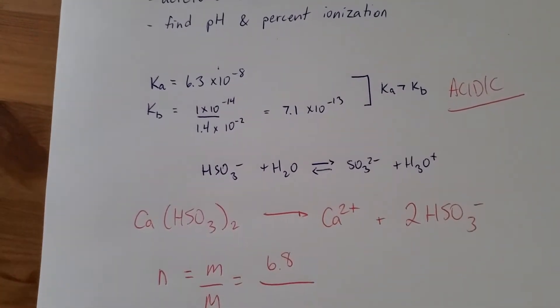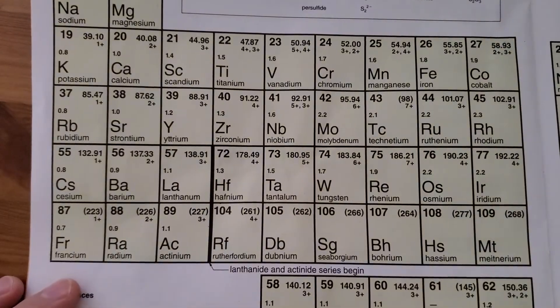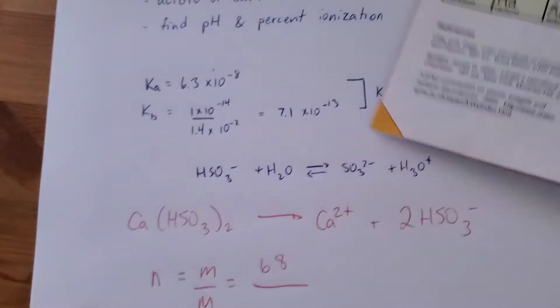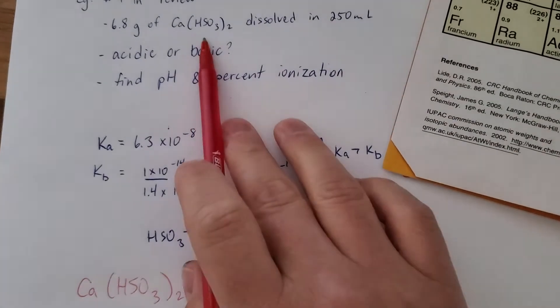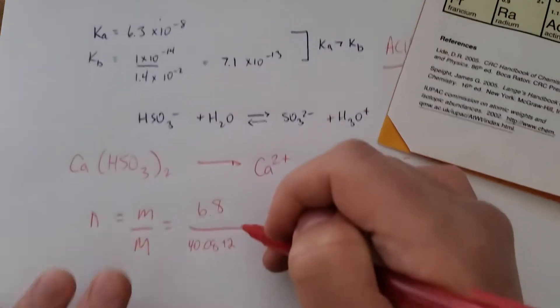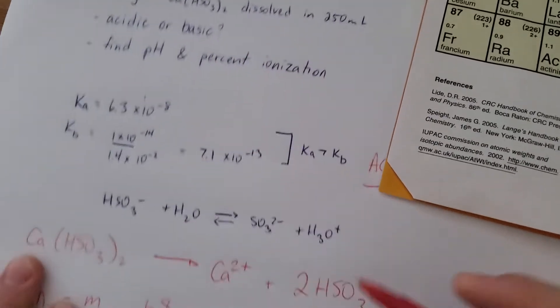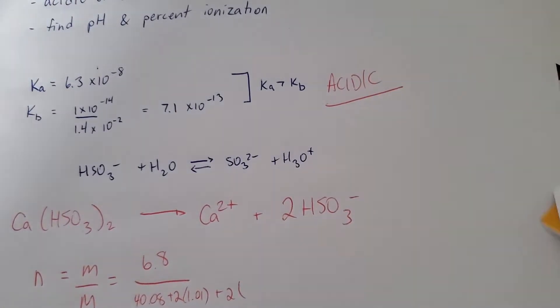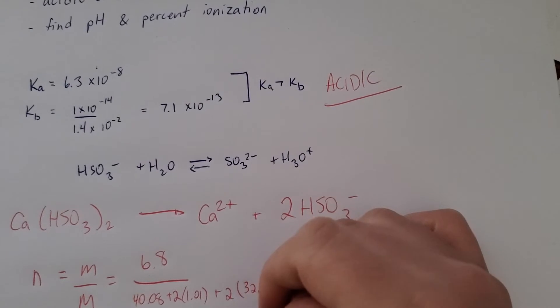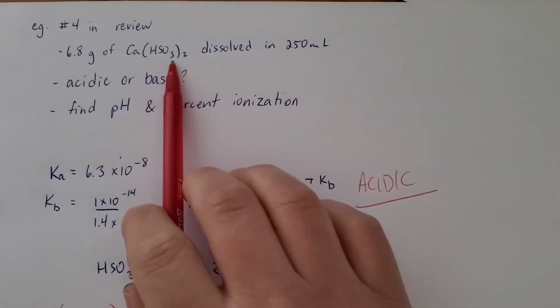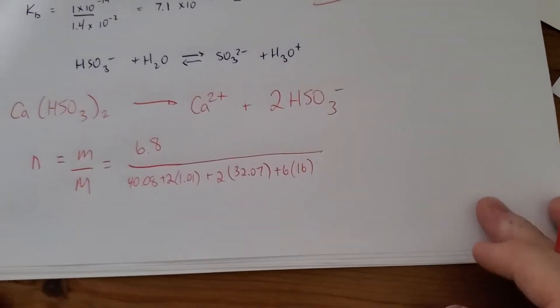Molar mass. We got some work to do. So I've got my periodic table here. Calcium. It's got a molar mass of 40.08. Then there's going to be two hydrogens. There's going to be two sulfurs. Sulfur's molar mass, 32.07. And there are six oxygens.